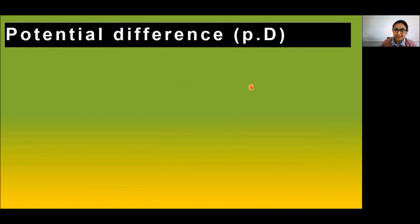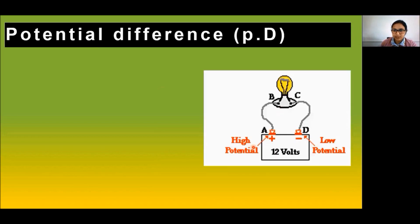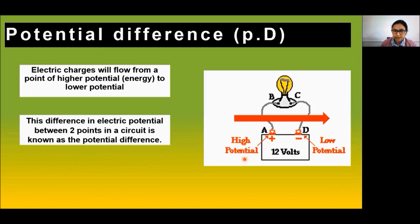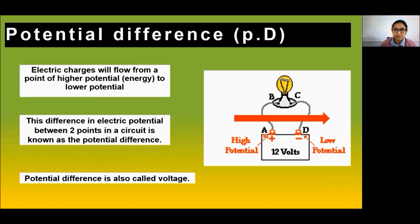For the flow of charge in a conducting metallic wire, gravity has no role to play. Electrons move only if there is a difference of electric pressure called the potential difference along the conductor. This potential difference may be produced by a battery consisting of one or more electric cells. Electrons always flow from a higher potential region to a lower potential region. The difference in electric potential between two points in a circuit is known as potential difference, which is the same as voltage.